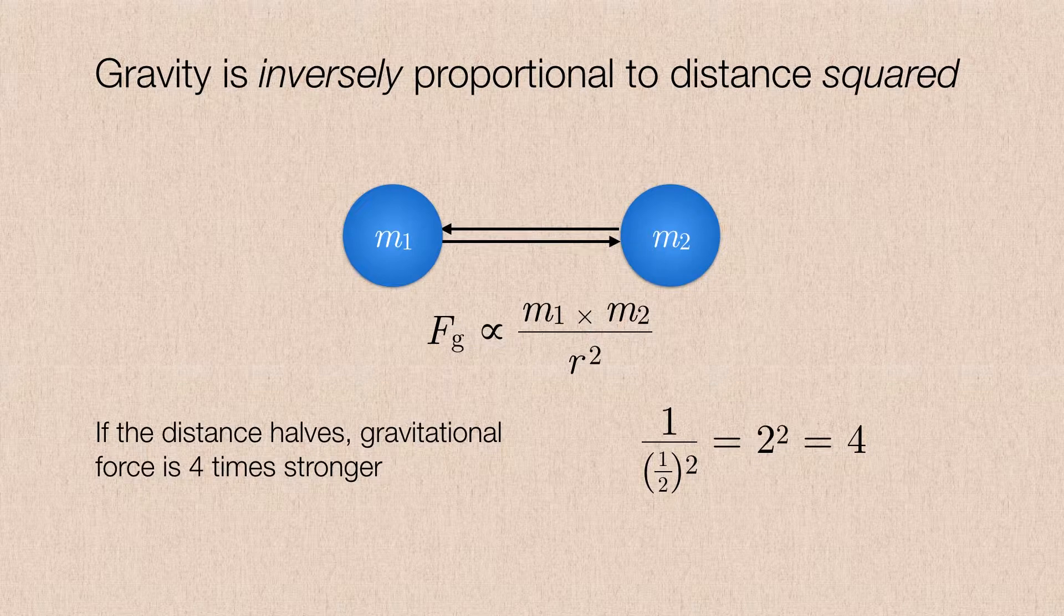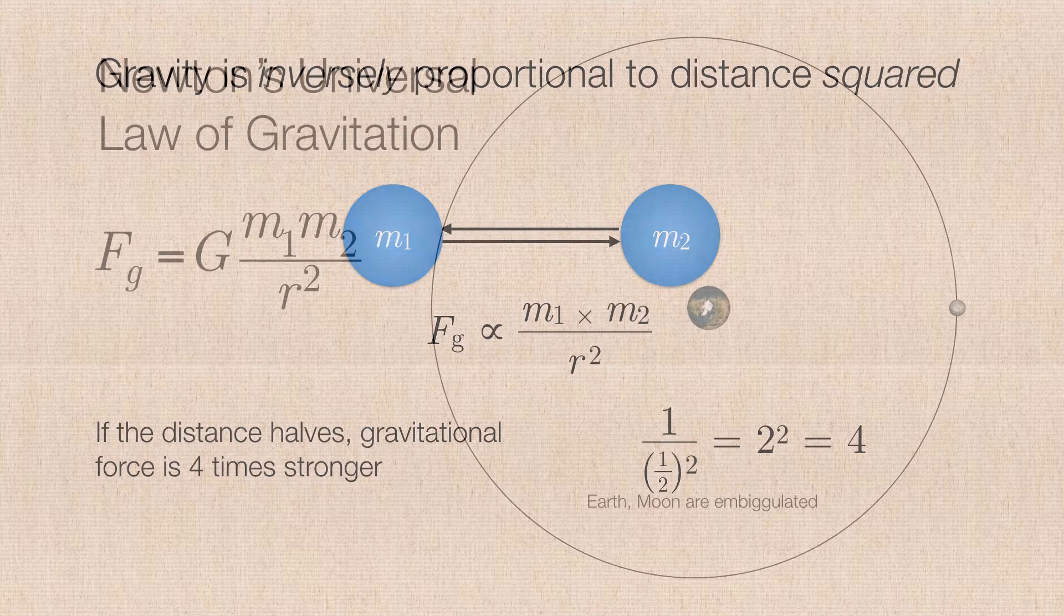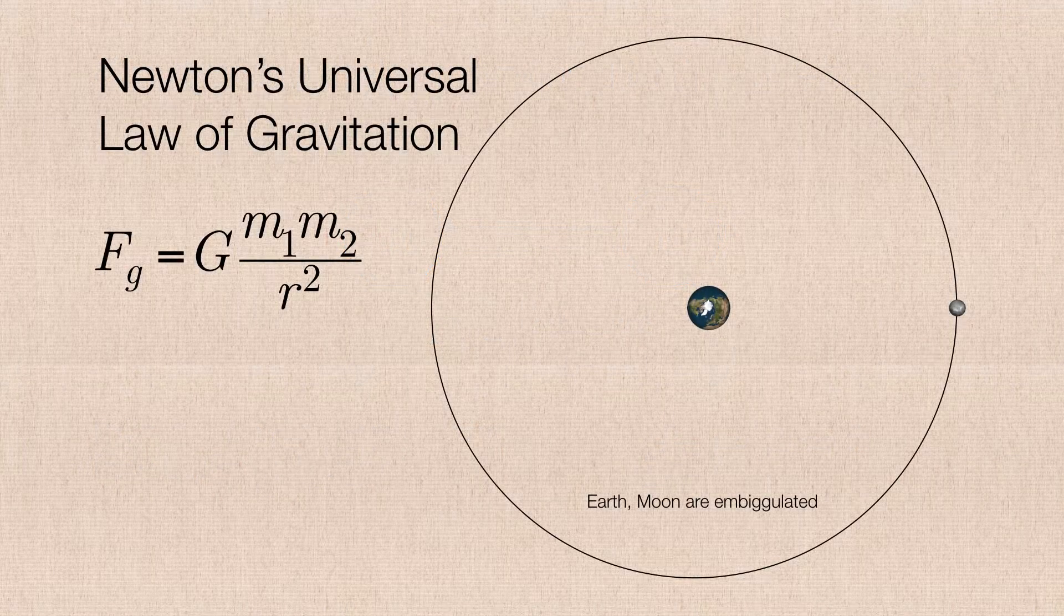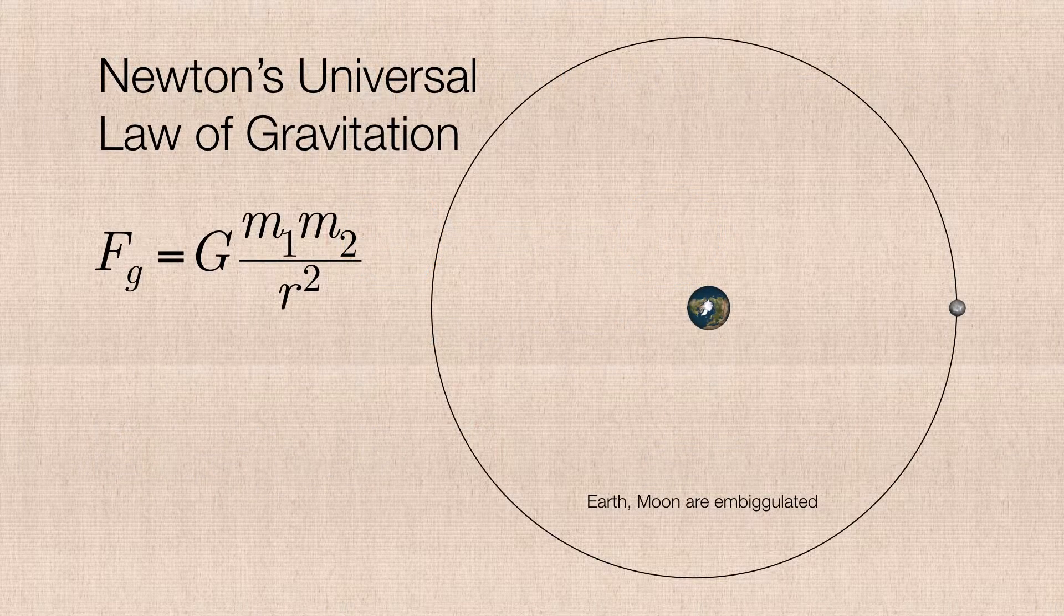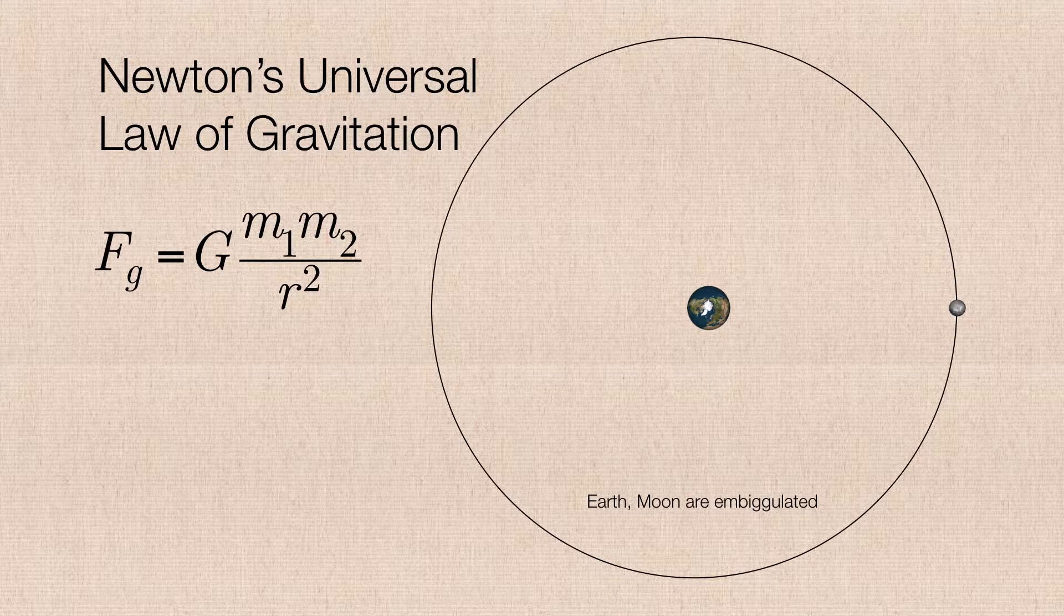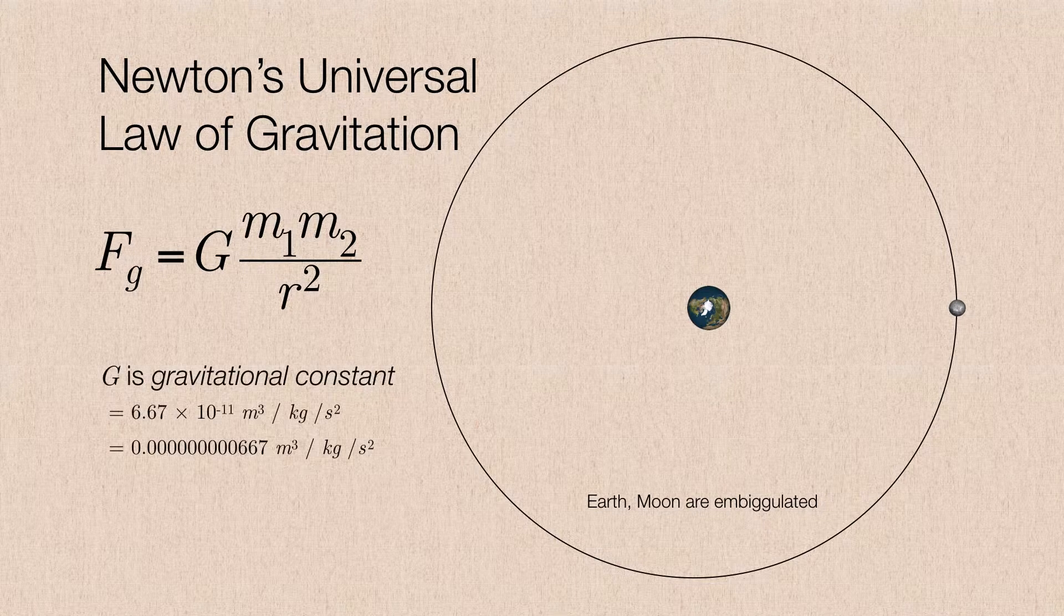So to tie both halves of the equation together, instead of using the proportionality between the two, we just need to invoke a constant to bring these two together. And the force of gravity is therefore the product of the two masses divided by the distance between them squared, multiplied by a value called the gravitational constant.